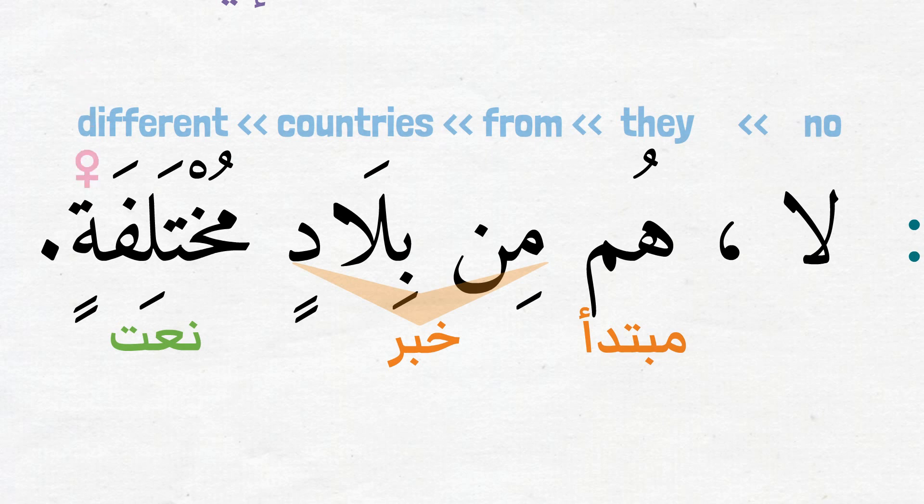Why is the اسم مختلفة مؤنث? That is because بلاد is جمع غير العاقل. So it is treated as مؤنث.